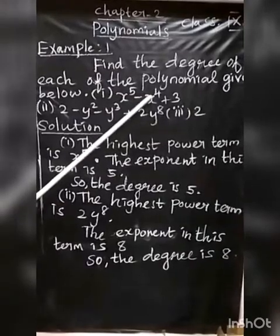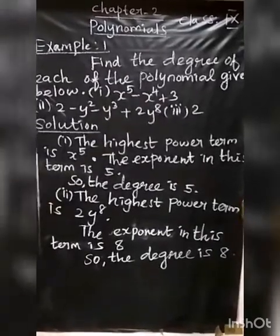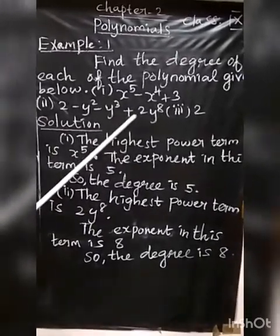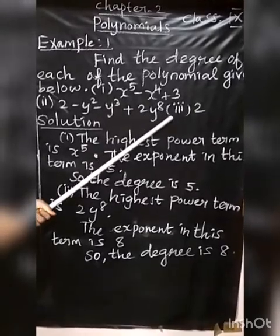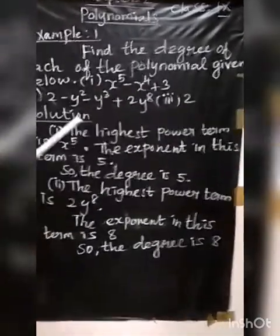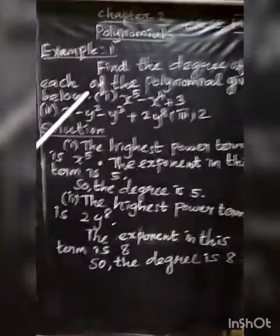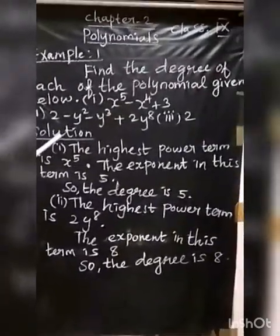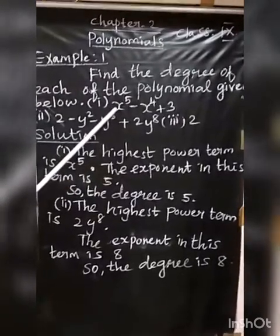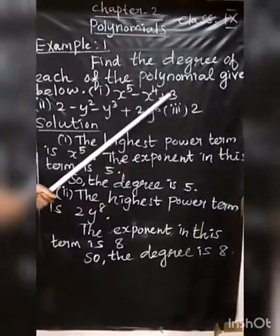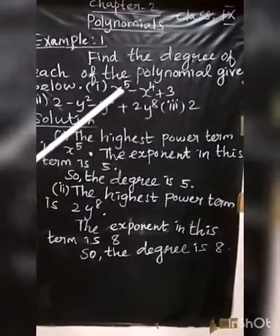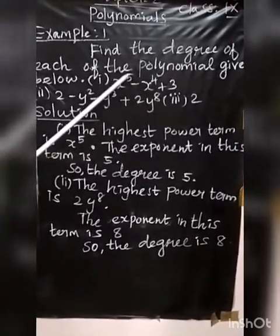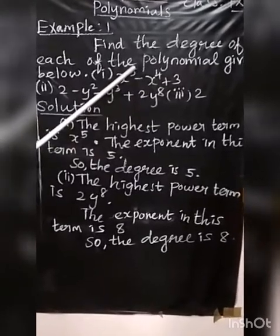First sum: X Power 5 Minus X Power 4 Plus 3. Second sum: 2 Minus Y Square Minus Y Cube Plus 2Y Power 8. Third sum: 2. Find the degree of each polynomial. For the first sum, the terms are X Power 5, X Power 4, and 3. The highest power term is X Power 5.